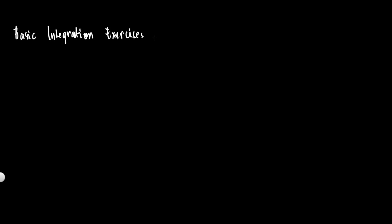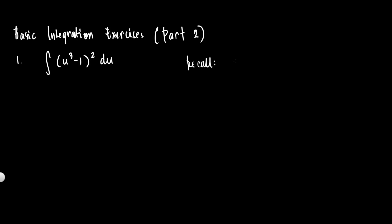Basic integration exercises, part two. Let's try to solve this one: the integral of (u³ - 1)² du. In the previous video, we covered the power formula and other basic integration formulas. To recall, the power formula is the integral of u^n du, which equals u^(n+1) over (n+1) plus C, provided that n is not equal to minus one.